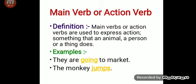Now, main verb or action verb. Definition: main verbs or action verbs are used to express action — something that an animal, a person, or a thing does. Main verb is also known as principal verb. Keep this in mind. They can be used with a helping verb or auxiliary verb, and may be used independently.